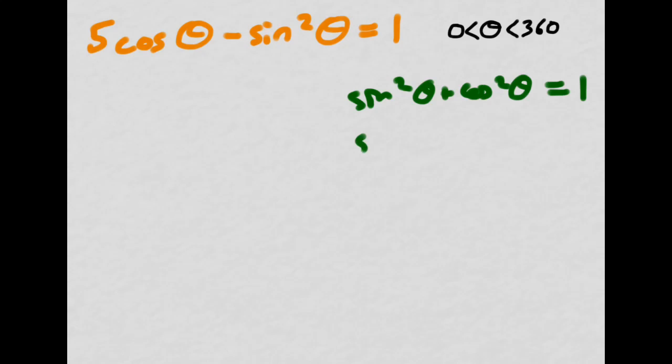Rearranging this identity tells me that the sine squared of an angle is equal to 1 minus the cosine of that angle squared. So what I'm going to do is substitute that in where I see sine squared theta.